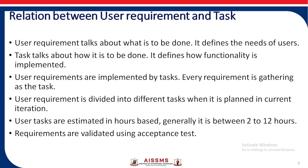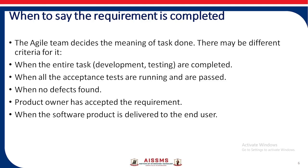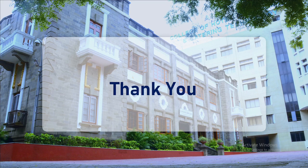Requirements are validated using acceptance tests. When is a requirement considered completed? The Agile team decides the meaning of task done — there may be different criteria. It is done when the entire task development and testing is completed, or when all acceptance tests are running and passed, when no defect is found, when the product owner has accepted the requirement, and when the software product is delivered to the end user. I hope you have understood Agile Methodology and its architecture. Thank you.